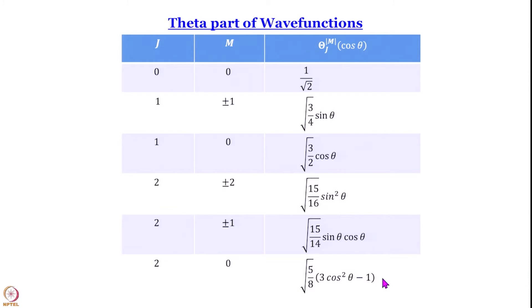I particularly like the function 3cos²θ − 1. This function keeps recurring in many many places: in the rigid rotor, hydrogen atom, NMR spectroscopy, and fluorescence spectroscopy. More about it a little later.